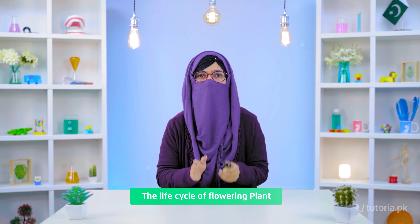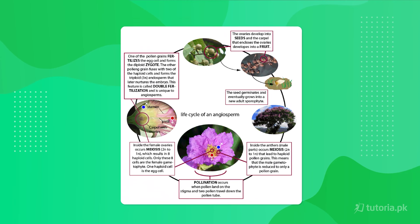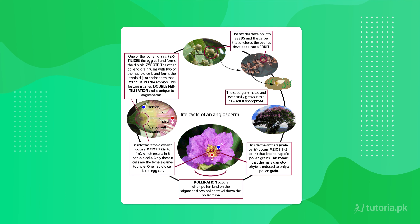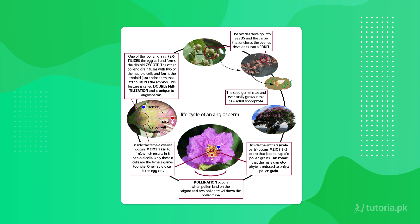Now we talk about the angiosperm life cycle — the flowering plant life cycle. The angiosperm life cycle starts when a seed is on the ground. The flower is the reproductive part. Going through the diagram: the seed germinates in the soil and produces a sporophyte. In the sporophyte, the male part produces anthers which contain pollen grains, and the female part produces ovules which contain eggs. These combine through a process called pollination — when pollen grains land on the female stigma, pollination occurs. Then fertilization takes place, producing a zygote. The zygote develops into a seed, which is protected by the fruit. The fruit eventually exposes the seed, the seed germinates, and the life cycle starts again.